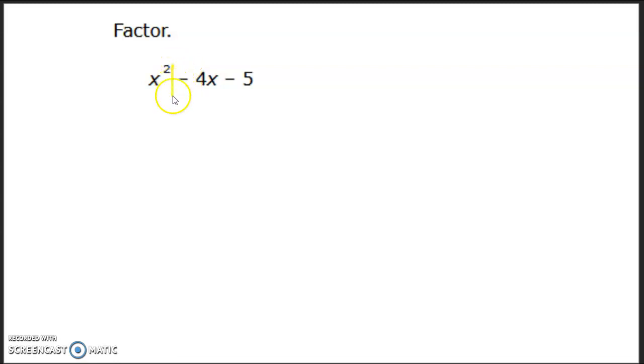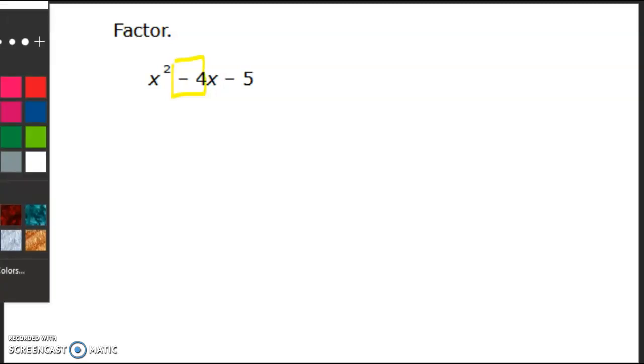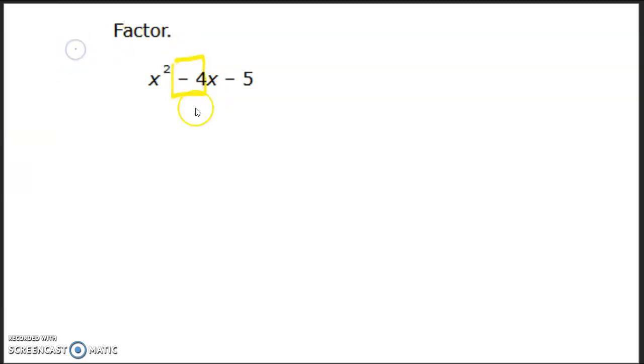This one has a negative sign in front of that 4x. We need something that adds, oh, I'm using, I don't know where that one came from. Sorry. It needs to add to be negative 4, and this back one is also negative, and it needs to multiply to be negative 5. All right, so let's make some examples, okay? Well, to be negative, that means one number has to be positive, and one number has to be negative. So let's think about this, right?